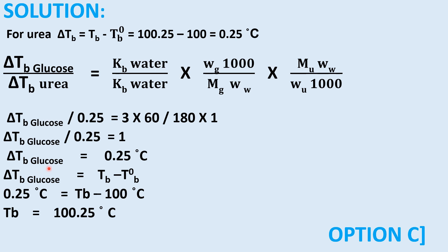Since delta Tb for glucose = 0.25°C, and delta Tb = Tb − T0b, we get: 0.25 = Tb − 100°C. Therefore Tb = 100.25°C. Option C is correct.